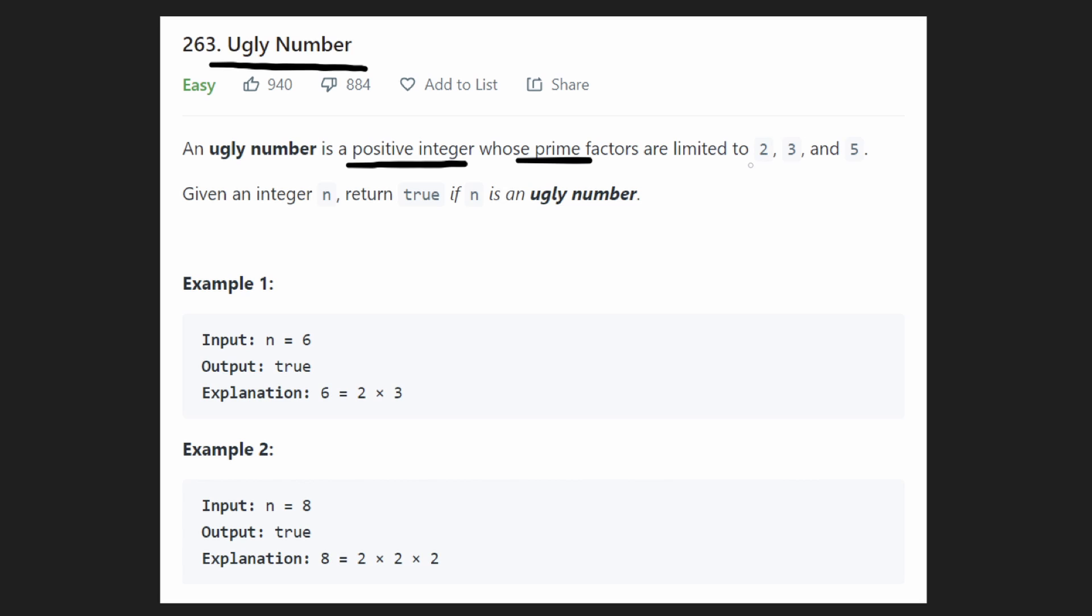First of all, what are prime numbers? Prime numbers are numbers such as 2, 3, or 5, where the factors of these numbers, for example, what are the factors of 5? The factors are 1 and 5, right? Either it's, you know, itself or the value 1. Any number who has factors that are just itself and 1, that basically means that this number is a prime number.